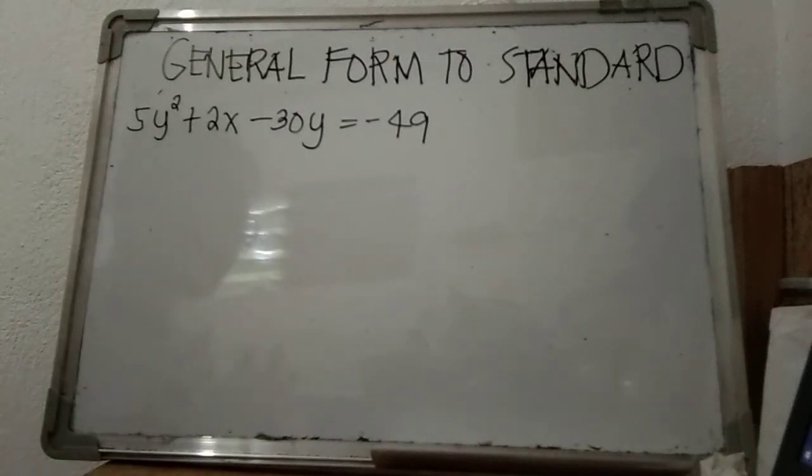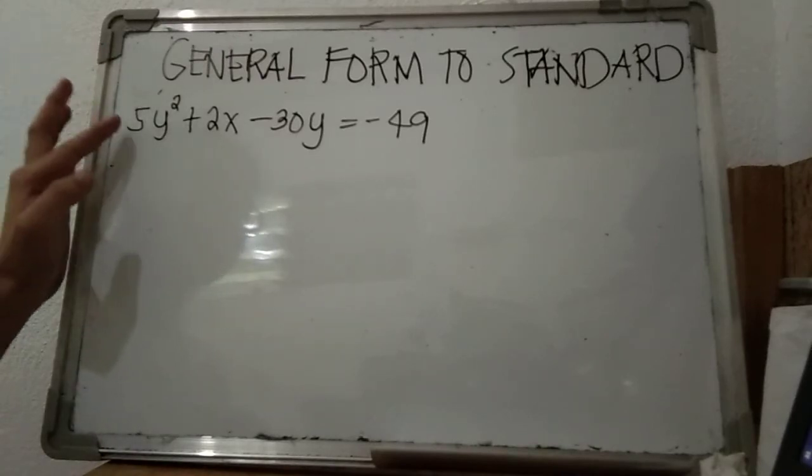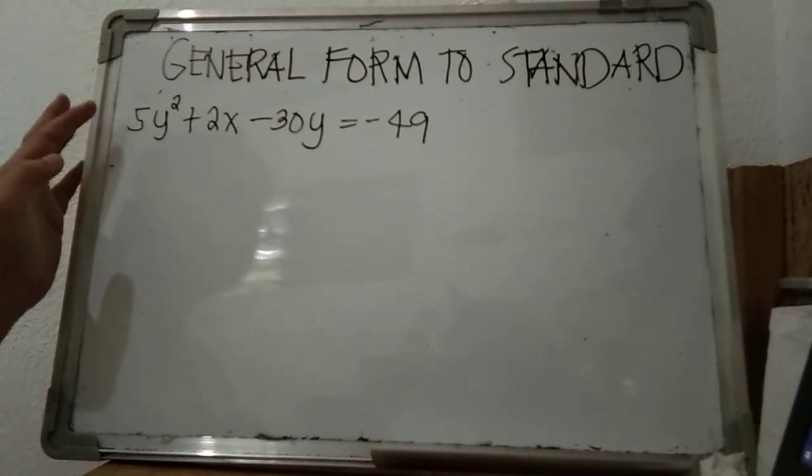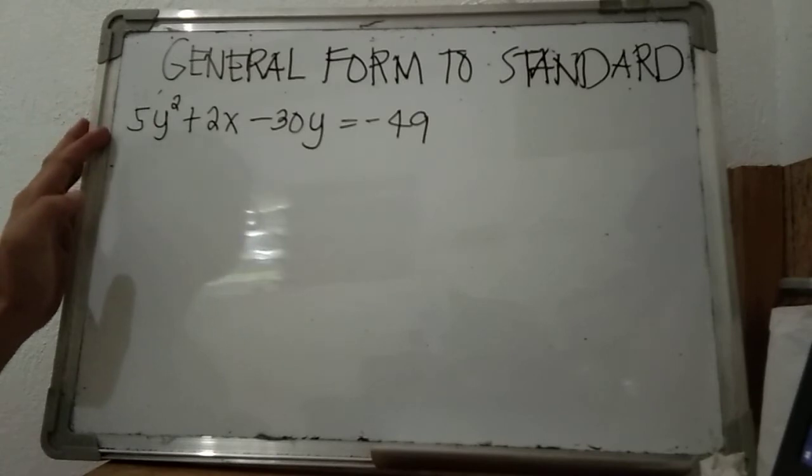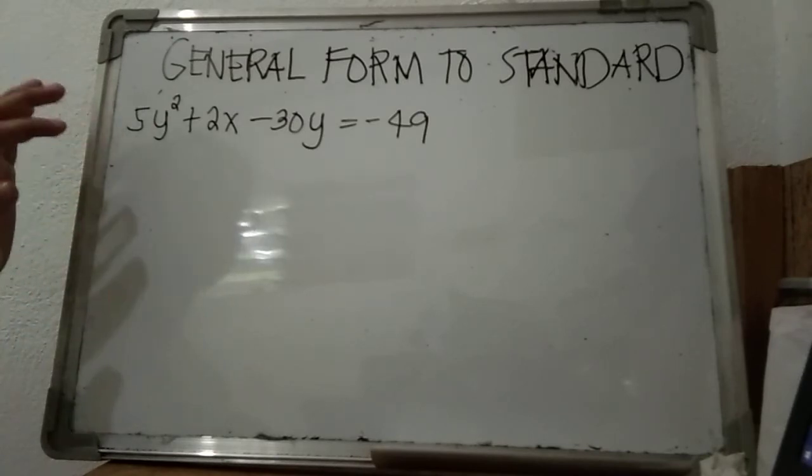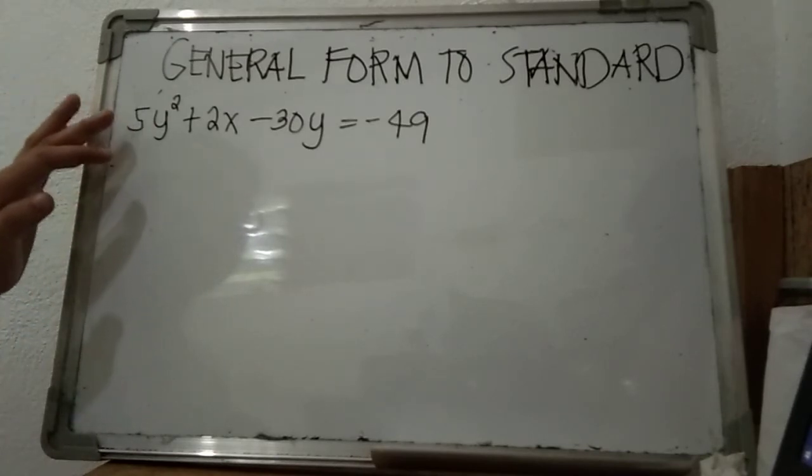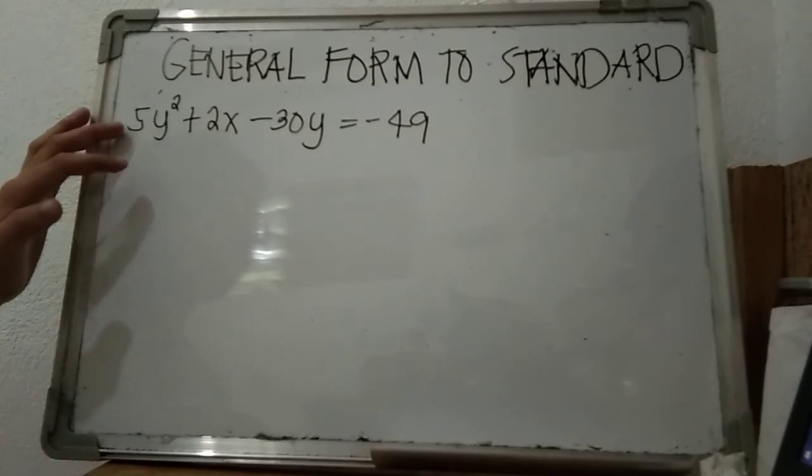Hello guys, in this video we will be discussing transforming the general form equation of a parabola to the standard form equation. This is an example of a general form equation of a parabola: 5y² + 2x - 30y = -49. Our goal is to transform this into standard form.